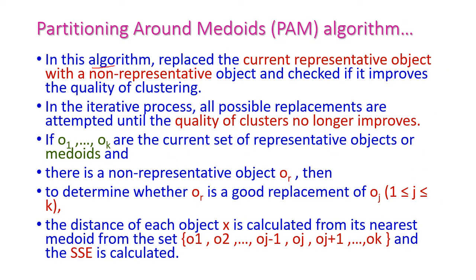The PAM algorithm replaces the current representative object with a non-representative object and checks whether the quality of clustering has improved. If the quality improves, the algorithm continues. Otherwise, if there is no change, the algorithm terminates. In this iterative process, all possible replacements are attempted until the clustering quality is no longer improved.